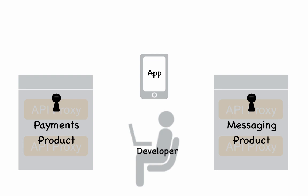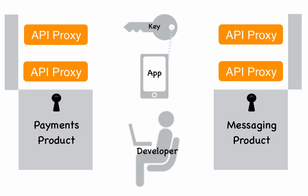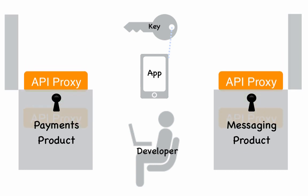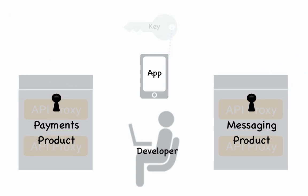Creating the app provides the developer with an API key that they put into their code that unlocks access to the resources in your API product. At this point, your API is ready to go out to your developer community. However, if you are monetizing your API, you'll need to create just a few more artifacts to prepare it for use.